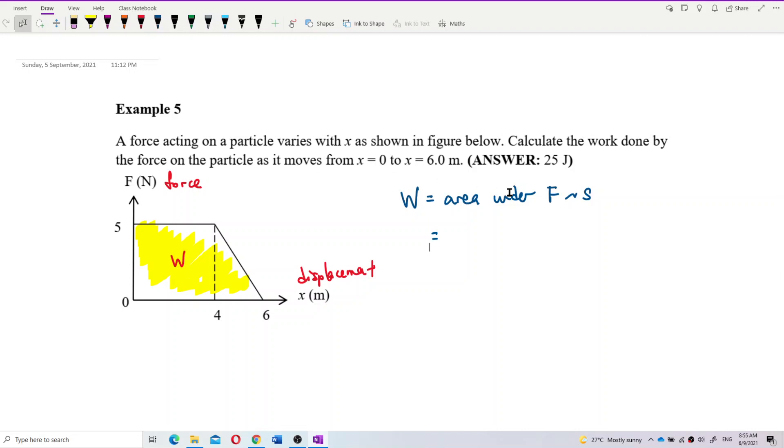So work done is area under the force-displacement graph. Work done from x equal to 0 to 6. Work done from 0 to 6, that means the area of the whole graph.